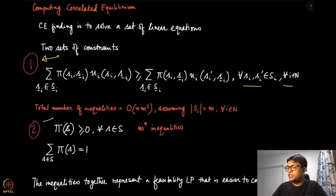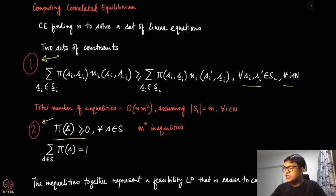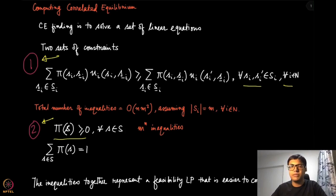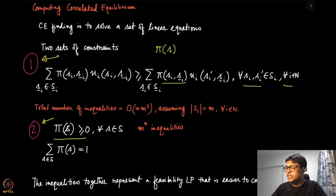The second set of inequalities is simply the feasibility condition: these must be valid probability distributions. Each π(s) should be non-negative and they should sum to one. Notice that the optimization variables here are the joint probability masses π(s) over all strategy profiles, not individual per-player probabilities.